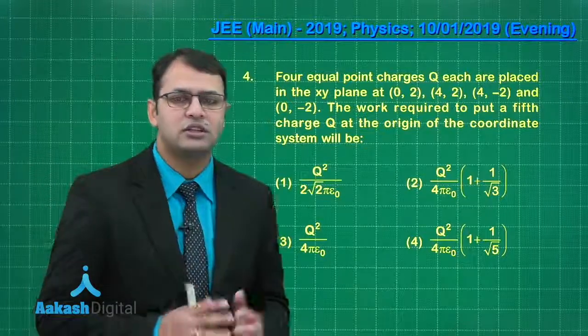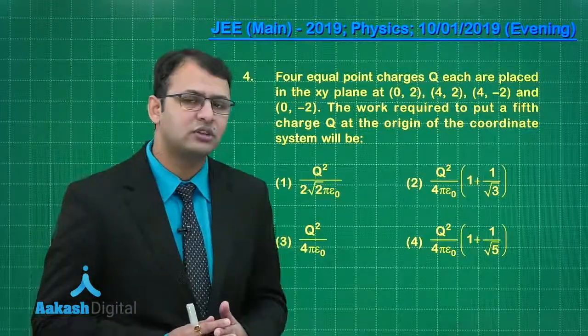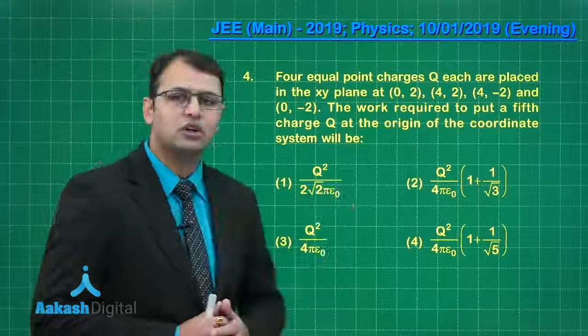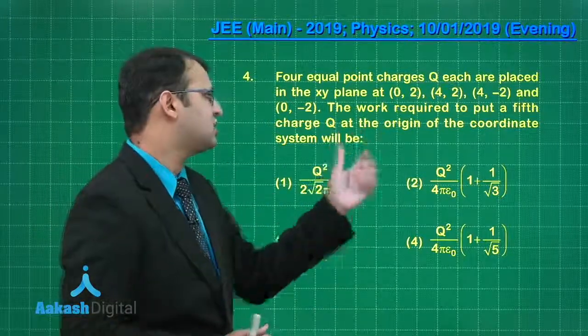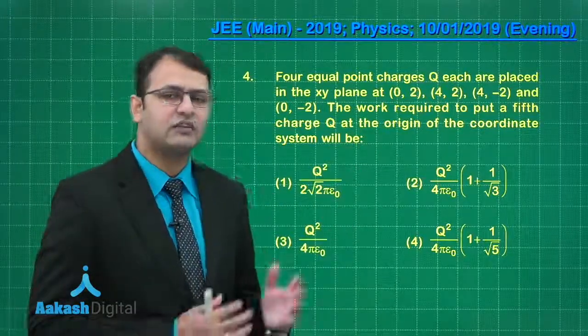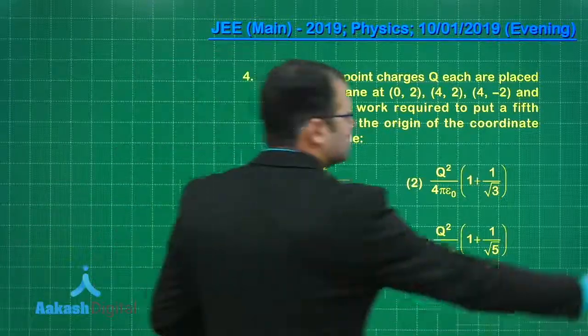What we need to do is calculate the potential difference between the origin of this coordinate system and infinity, and multiply this charge capital Q with the difference. That will give us the work done. Let's start with the solution.